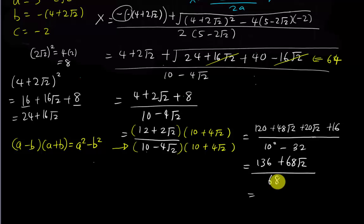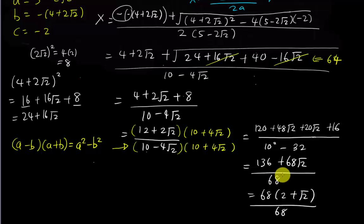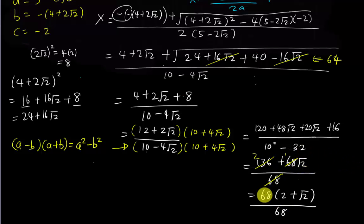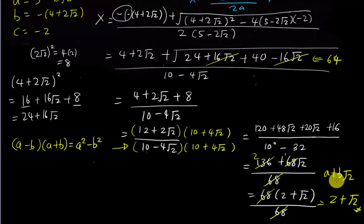Simplifying: (136 + 68√2) / 68. I factorize out 68 to get 68(2 + √2) / 68, which simplifies to 2 + √2. So the final answer is 2 + √2. The question asked for the form a + b√2, and here b = 1, so there's nothing written in front of the √2.